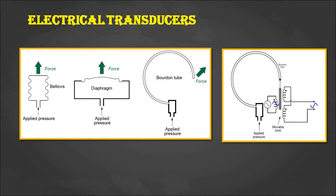Here is an example for the measurement of pressure, where two transducers are present. One is the Bourdon tube, which is the mechanical transducer. This Bourdon tube converts the applied pressure into a displacement. That displacement is then converted into voltage by using an electrical transducer — that is LVDT. Depending upon the core movement in LVDT, the output voltage will vary. The output voltage can be transferred over a long distance and the data can be stored, which is possible by converting the displacement into another quantity.